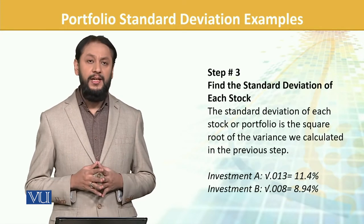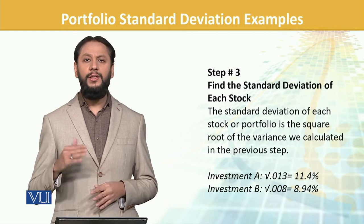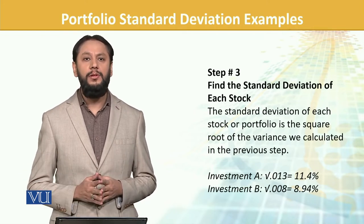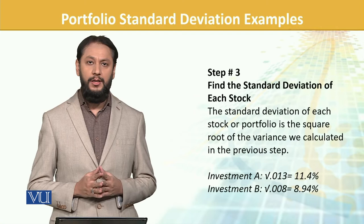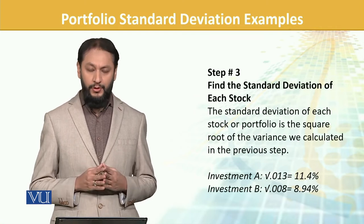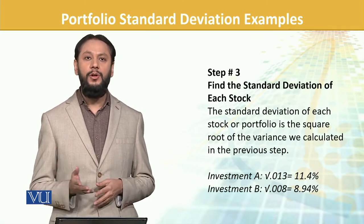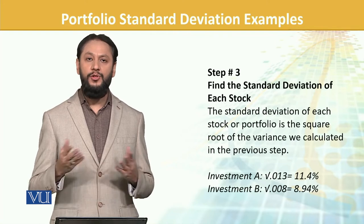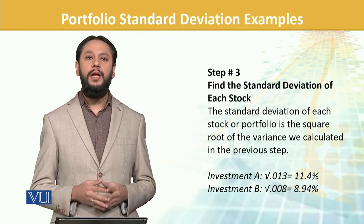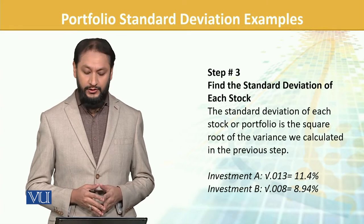Find the standard deviation of each stock. Converting from variance to standard deviation is not a difficult task — we already know the simple path. You take the standard deviation by taking the square root of the variance, and that is the standard deviation of any asset.